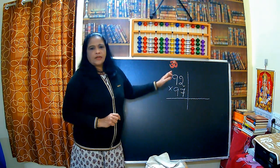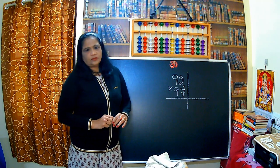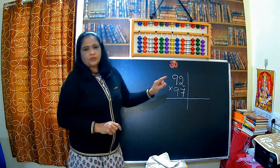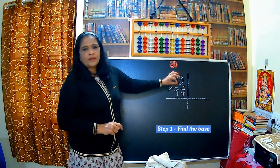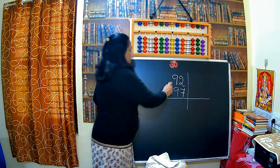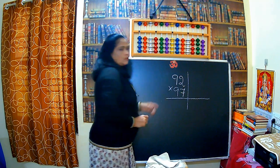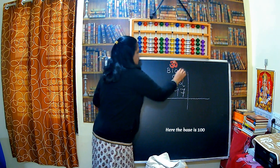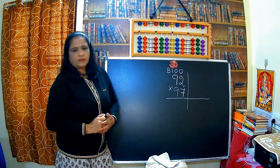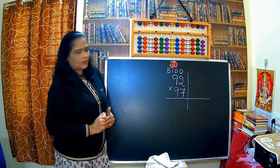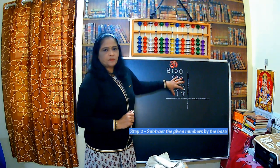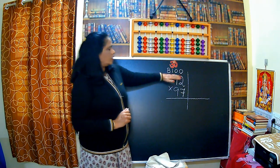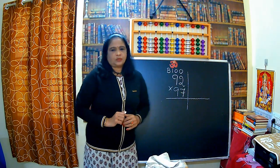Multiply the number 92 by 97. What is the first step? First step is to find the base number. This number is very near to 100, so the base is 100. That is the first step. In the second step, we are going to subtract the given numbers by the base, using the Nikhilam Sutra.